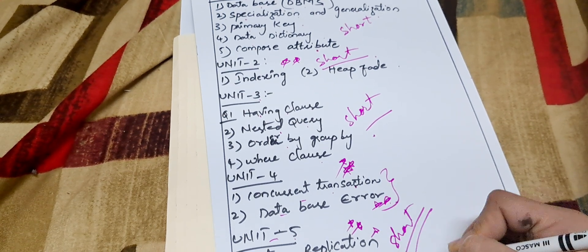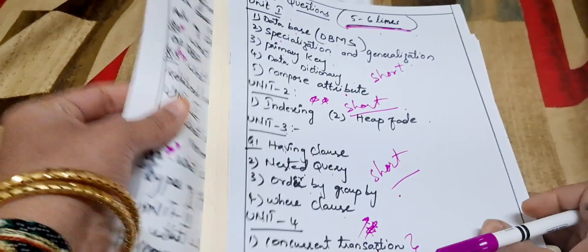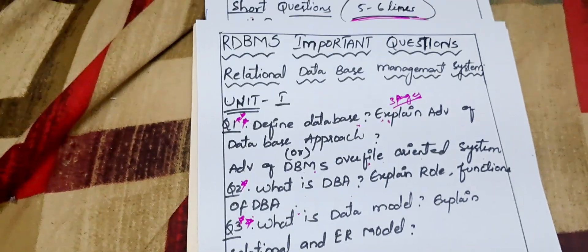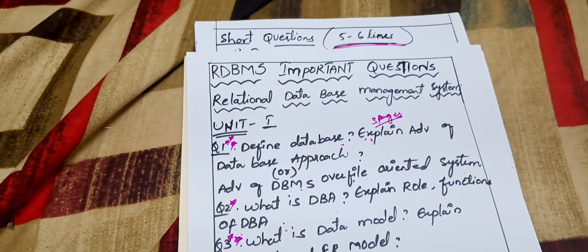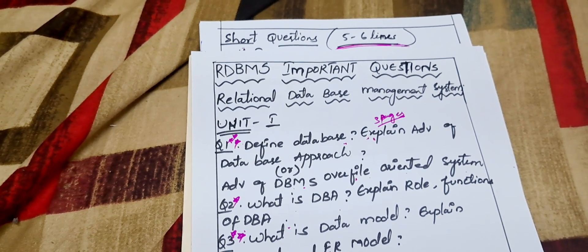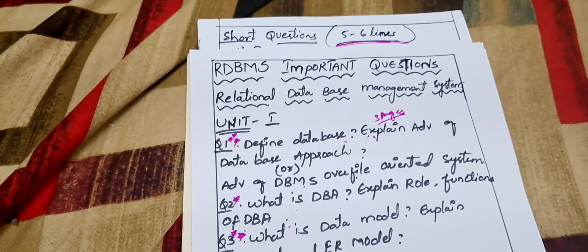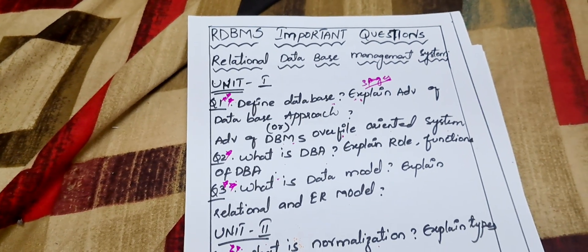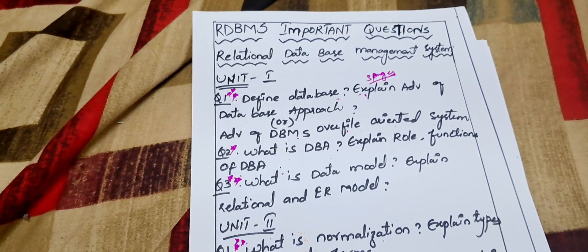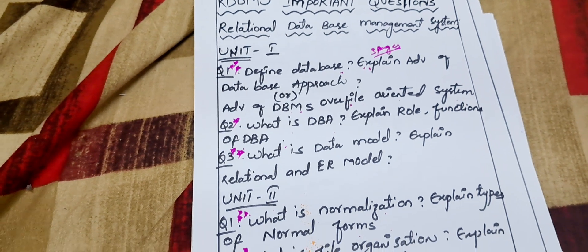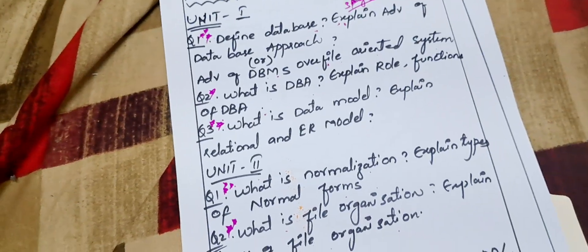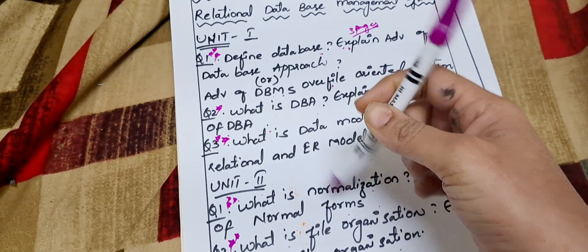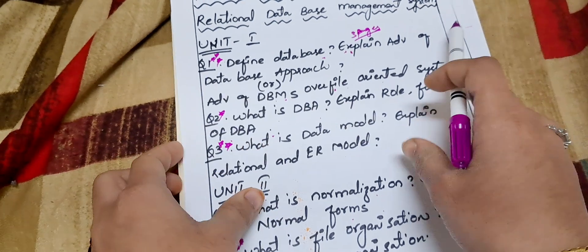We have now discussed all five units' short and long questions related to BCom third semester, second year, according to Osmania University syllabus — subject RDBMS, that is Relational Database Management System. I hope you are all clear on what to learn and what not to learn according to the latest syllabus. Try to learn all the questions and attempt everything. If you are new to my channel, please like, share, and subscribe. Thank you so much for watching.